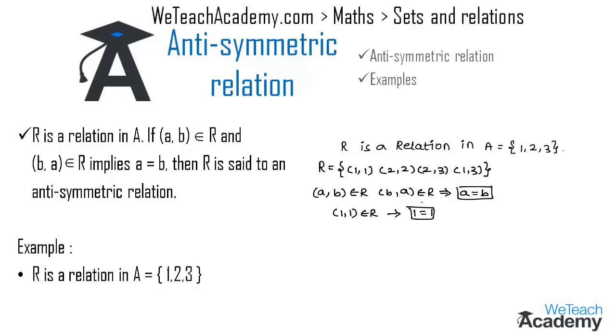So here R is satisfying the condition to be an antisymmetric relation. Here we have the other ordered pair (2,2) also belongs to R and it also satisfies the condition of antisymmetric relation. So here R is called an antisymmetric relation.